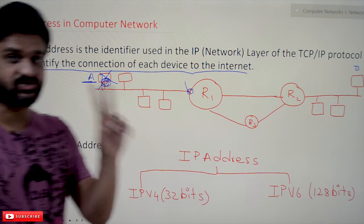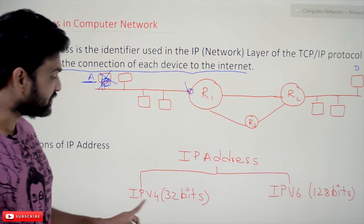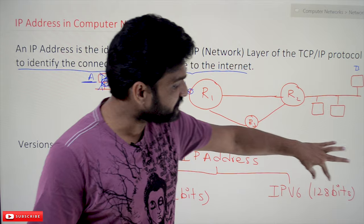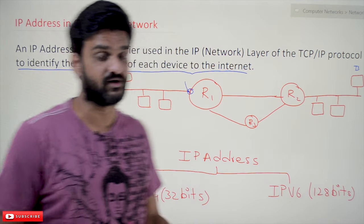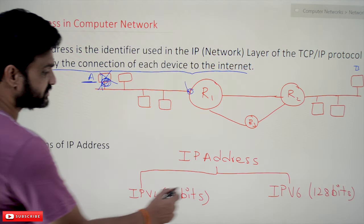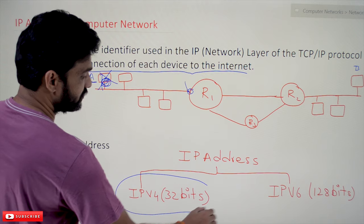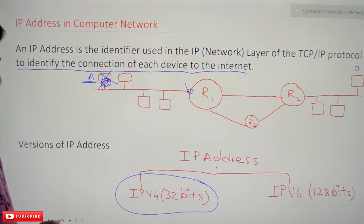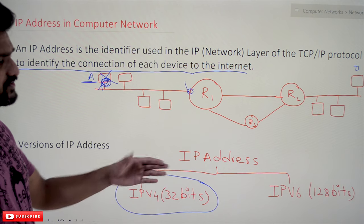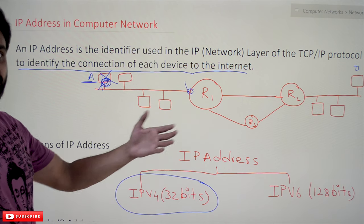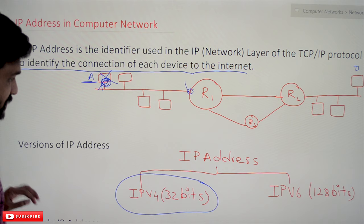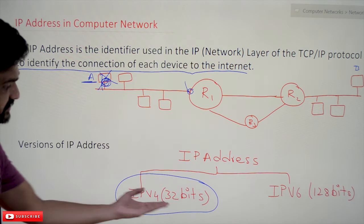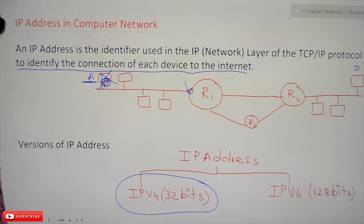There are two versions of IP addresses: IPv4, which is 32 bits long, and IPv6, which is 128 bits long. In our entire course we are going to discuss only IPv4 — IPv6 is beyond the scope of this course. IPv6 has different mechanisms and is 128 bits long, while IPv4 is 32 bits long.